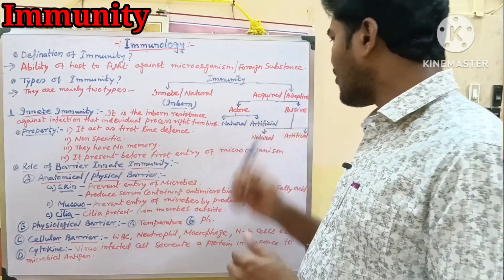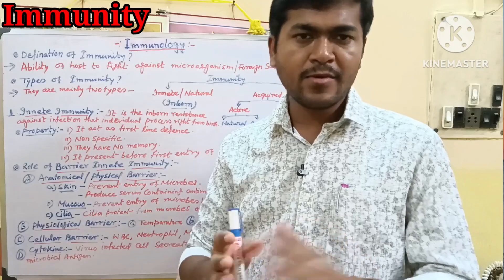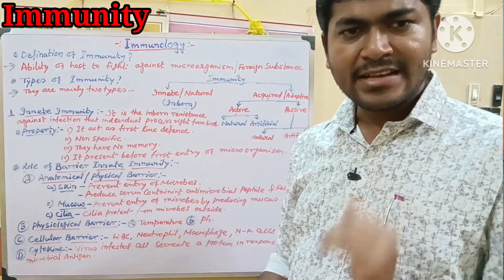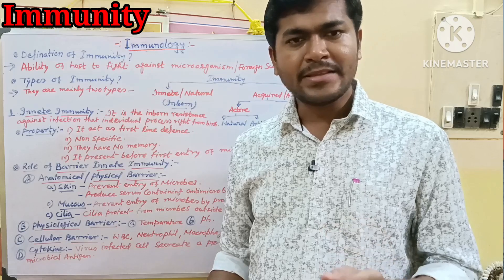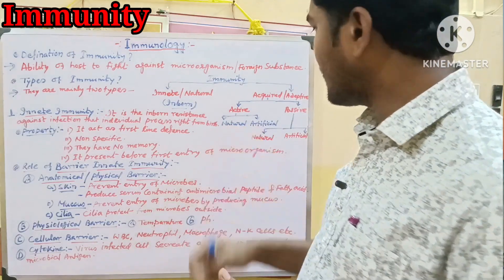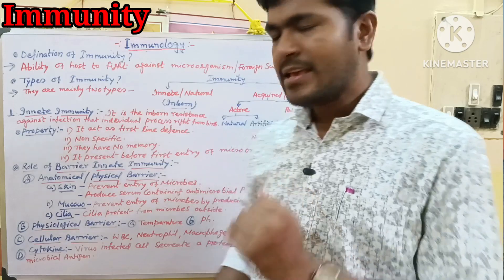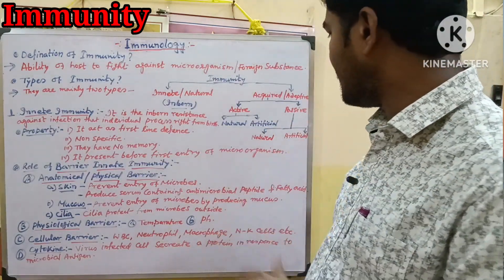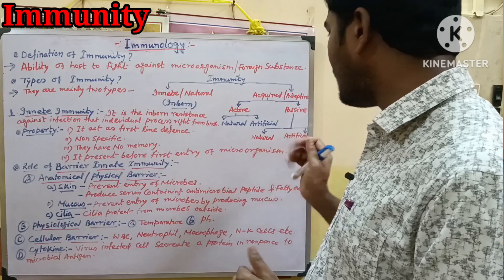Immunity can be active and passive. Active immunity can be natural and artificial, and passive immunity can also be natural and artificial.